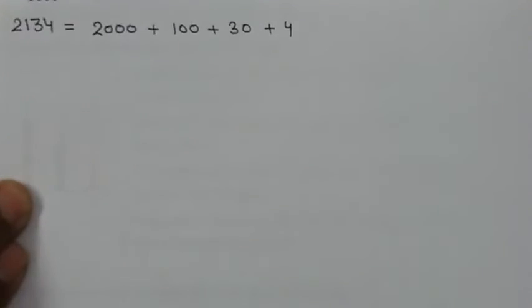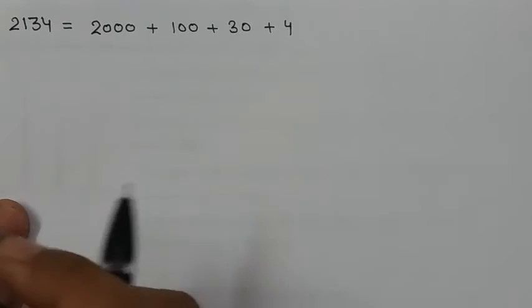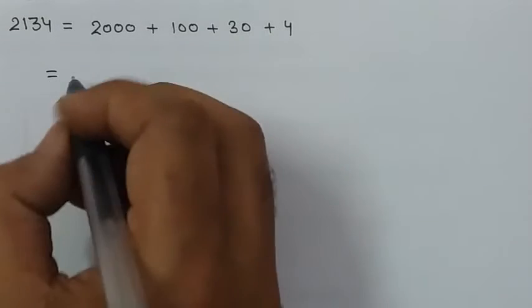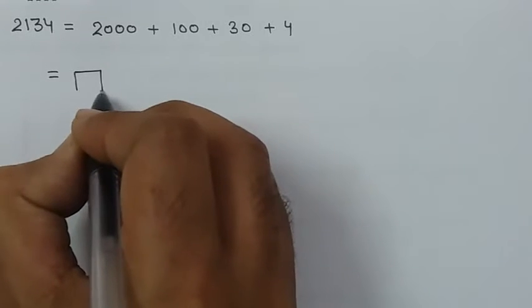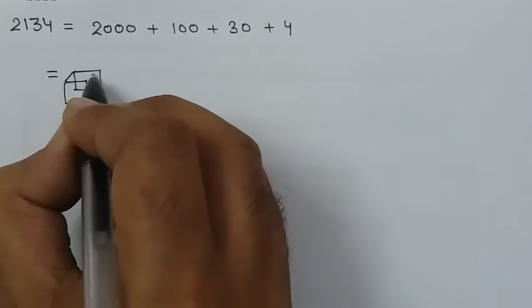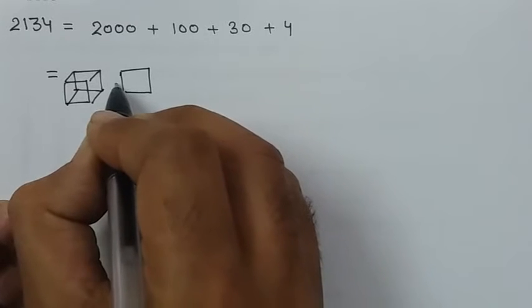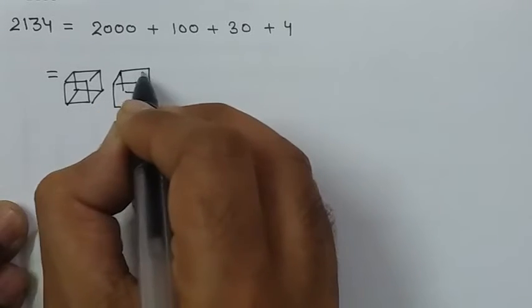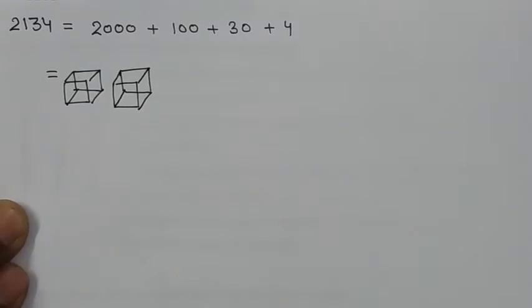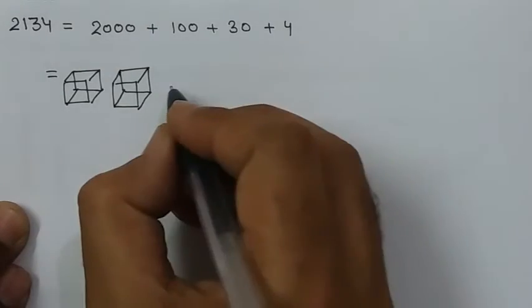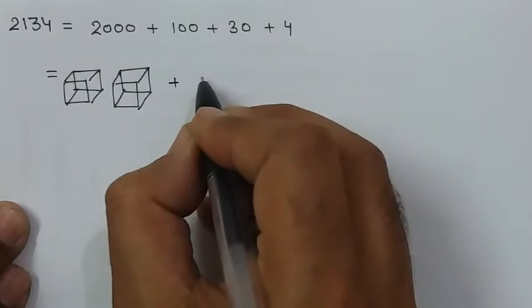Question number 2, first part, 2134. Look here, it is your question. How will it be? Let's write this, 2134. Now if we show this symbol or figure according to the form, how will it be? 1 thousand, 1 thousand, 2 thousand. You will color it. 2000. What will be 100? So simply you can form a square.